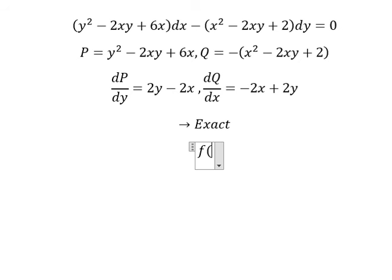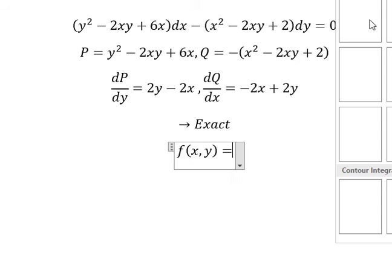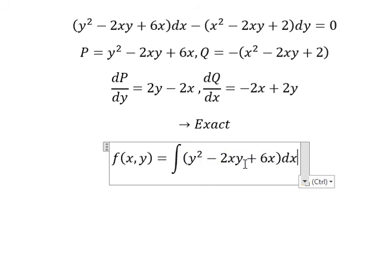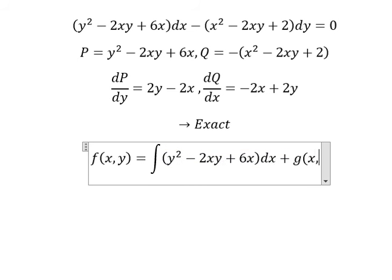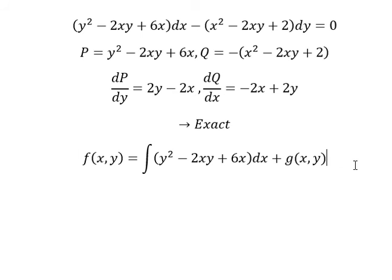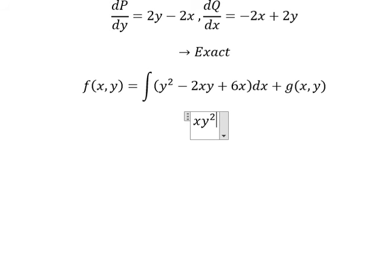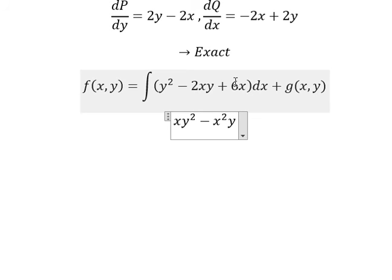So I will set up the function f(x, y). We have the integral of this one in here, plus three x y. The integral of this one gives y squared. The integral of two x gives x squared y, and the integral of six x gives three x squared.